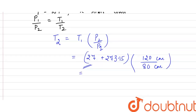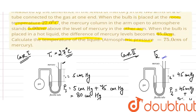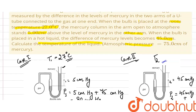So the temperature comes out to be 450.22 Kelvin. Or we can subtract 273.15 from it to get 177.07 degrees Celsius, or simply 177 degrees Celsius, which is the temperature of the hot liquid.